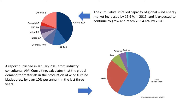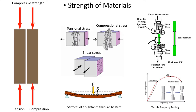A report published in January 2015 from industry consultants AMI Consulting calculates that global demand for materials in the production of wind turbine blades grew by over 10% per annum in the last three years. In this slide is listed a collection of terminologies which define strength of materials: compressive strength, tensional strength, compressional stress, shear stress, stiffness and tensile properties.